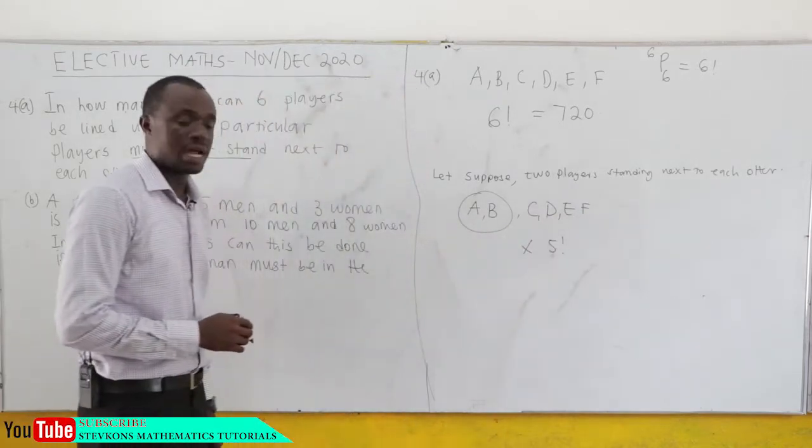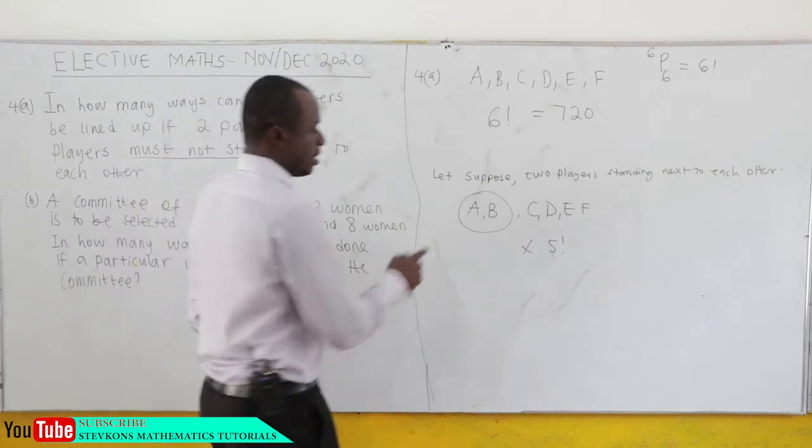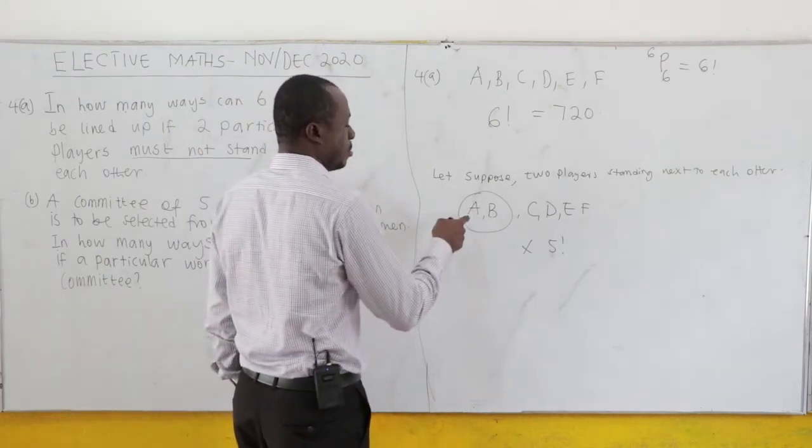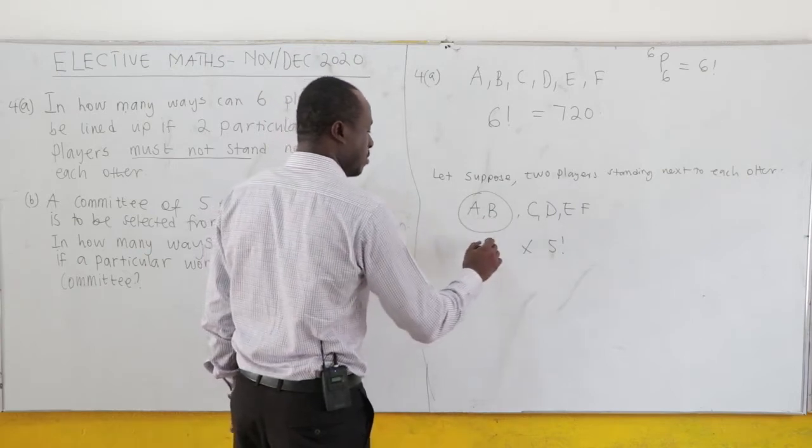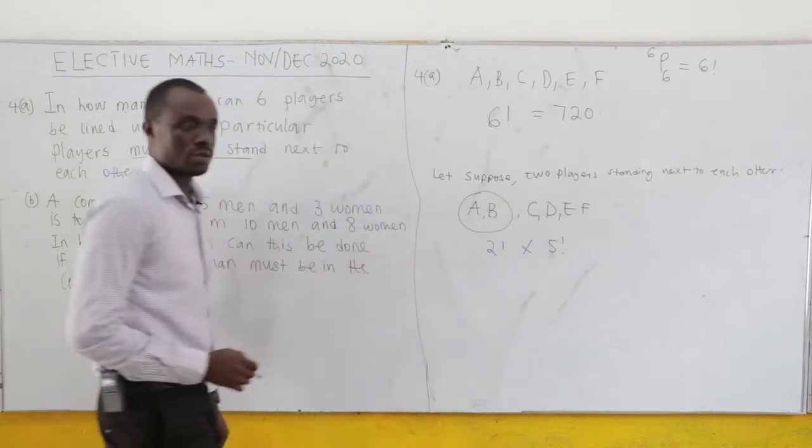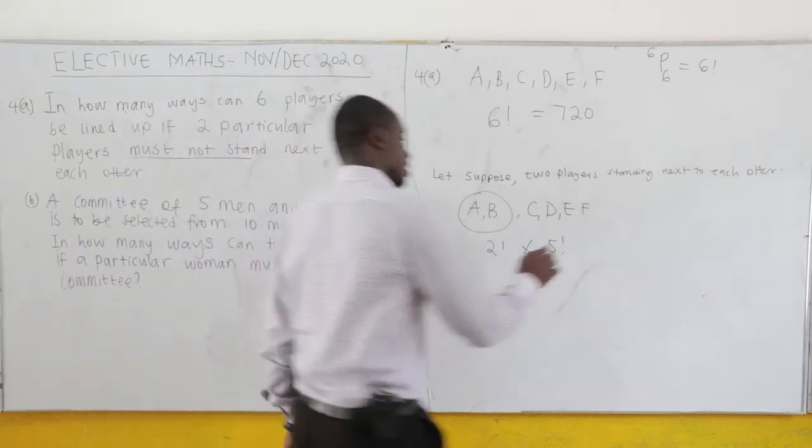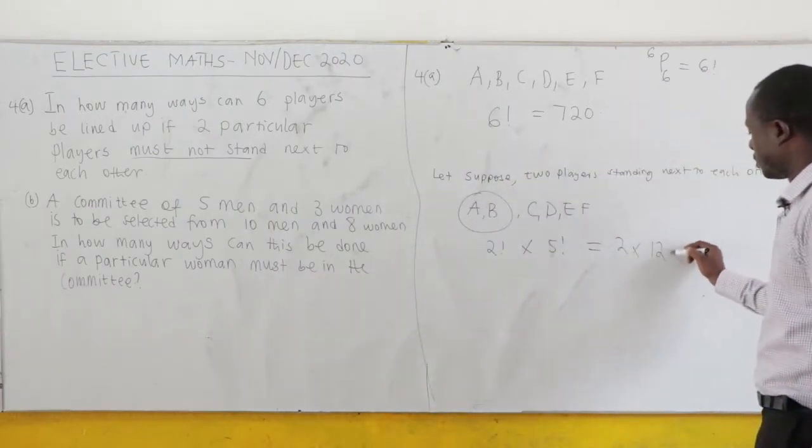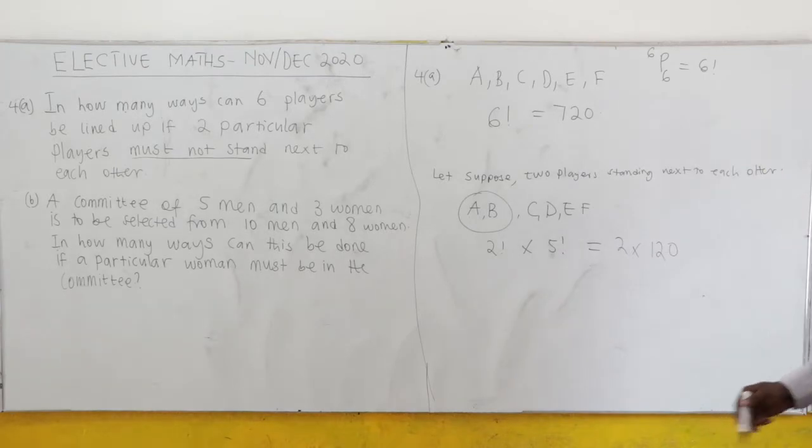Now A and B, arranging the A and B, either A will be here, B will be here, that's 1. Or B will be here, A will be here. So it can be arranged in 2 factorial ways. And this is the same as 2 times 120. 5 factorial is 120. And it is the same as 240 ways.